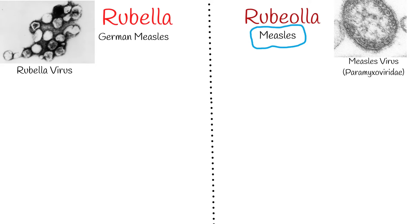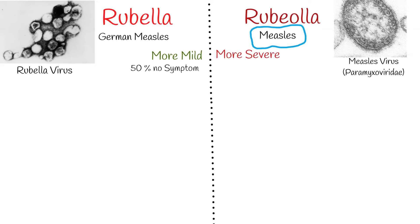In many cases rubella is more mild compared to measles. That's why sometimes it is also called 3-day measles, with half of people not even realizing that they are infected. But if complications occur, rubella complications can be serious.